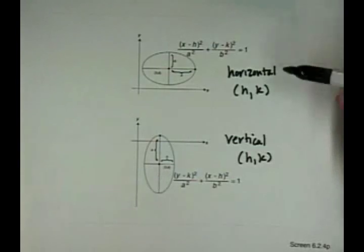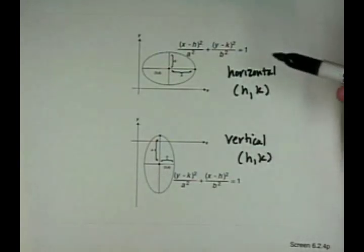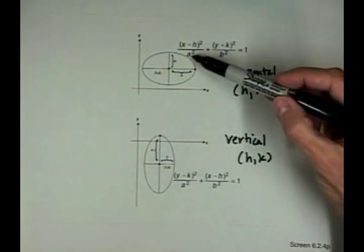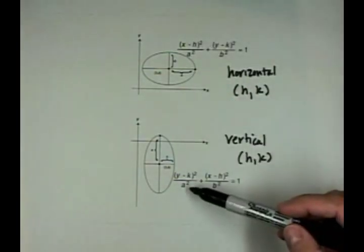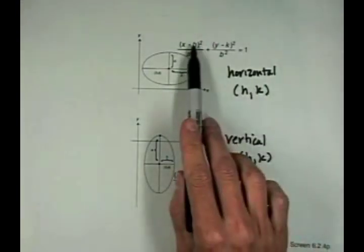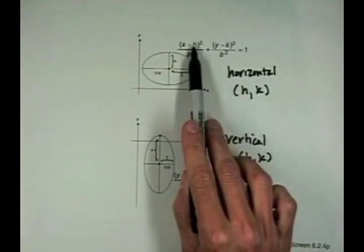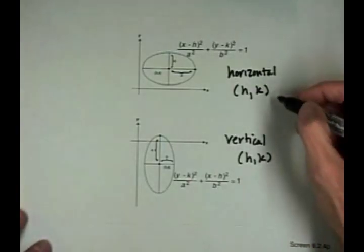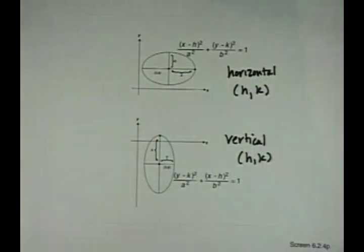We also want to consider ellipses that do not have their center at the origin. Here's how the original equations can be manipulated to translate their centers from the origin. The equations are almost the same — the top one has a horizontal major axis because the large denominator a is under x; the lower one has a vertical major axis. The coordinates h and k form the center of the ellipse.